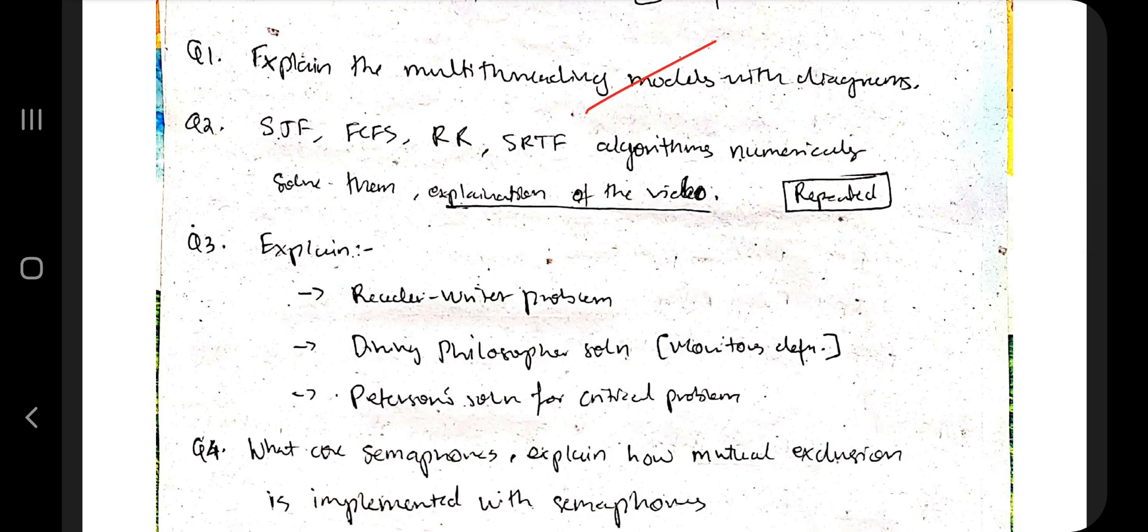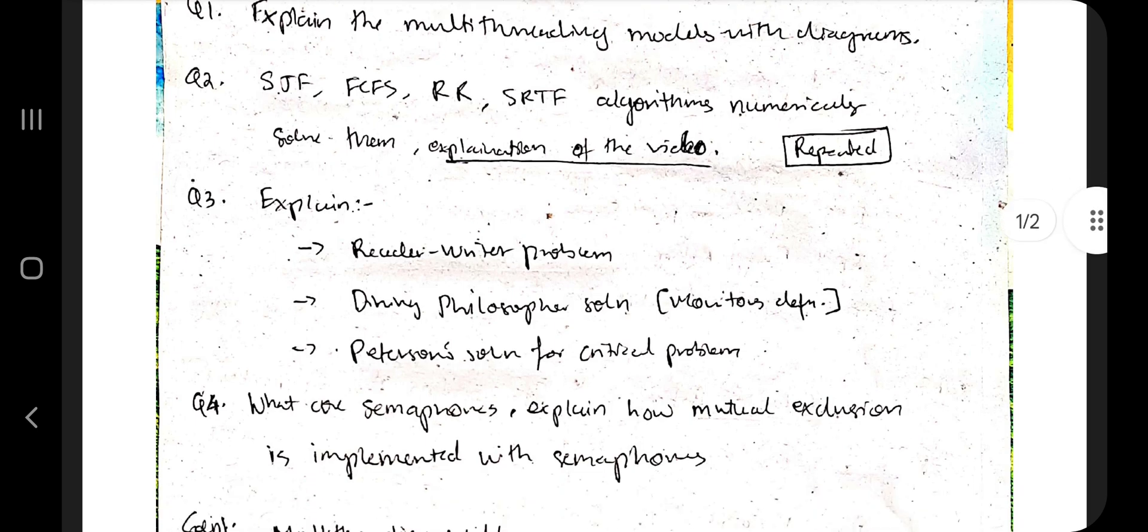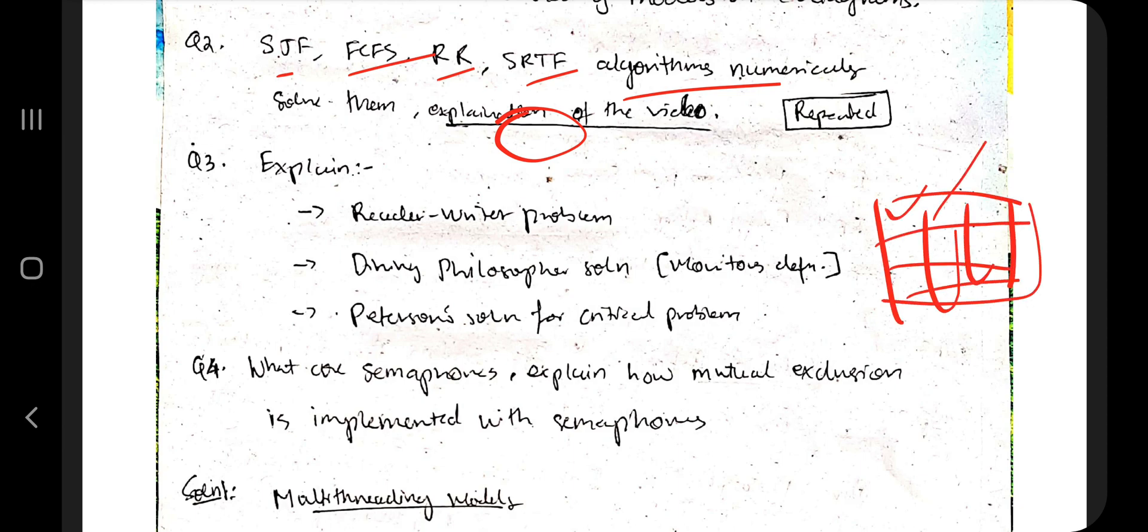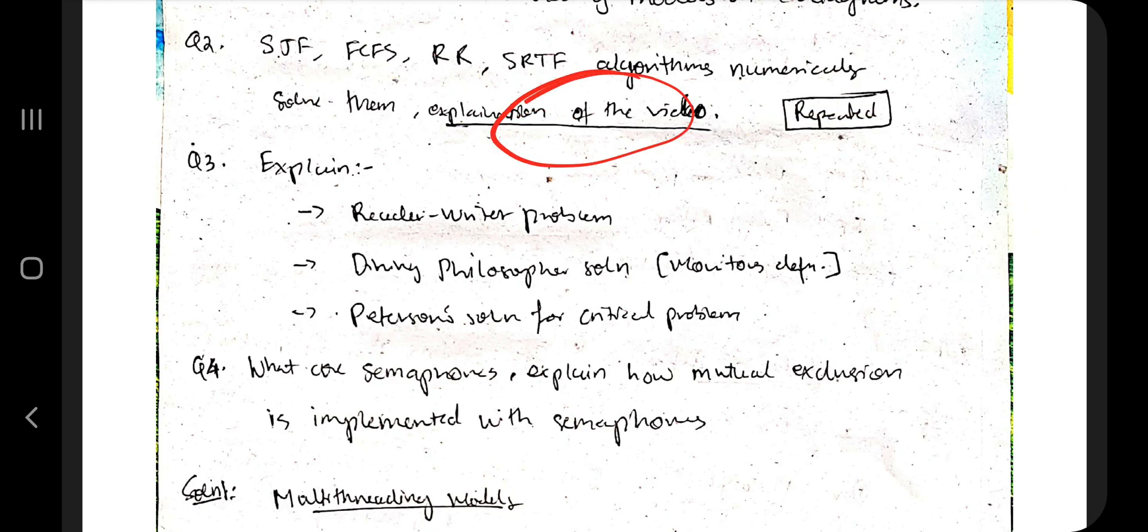Next one is the SJF, FCFS, RR, and SRTF algorithms. The question will be given with a chart that has processes, allocation time, and many things. If you watch the video of the theory, I've explained each of these, which formula to apply and how to solve them. Very important, it's repeated in almost all the papers.